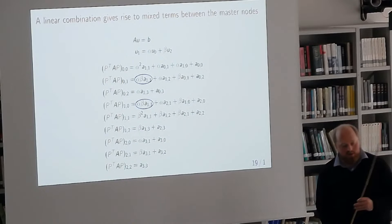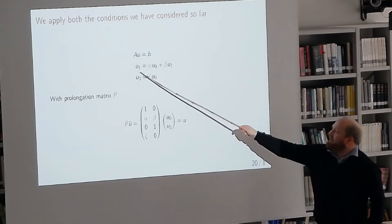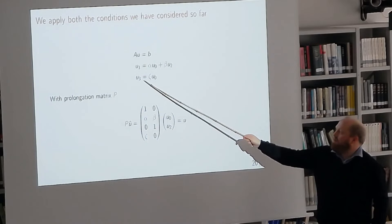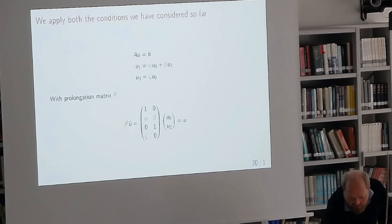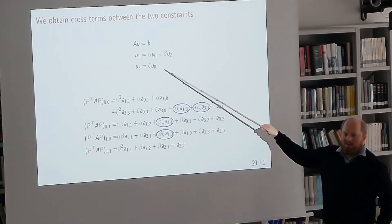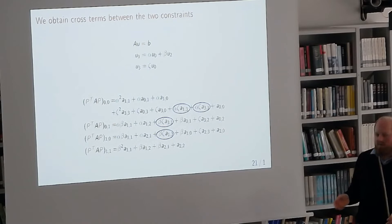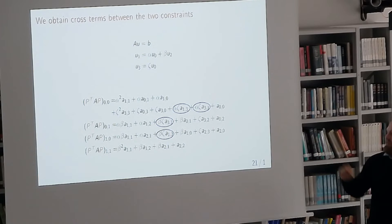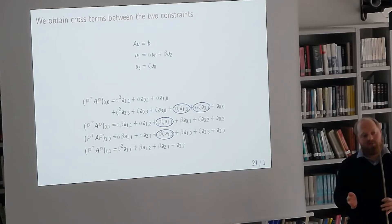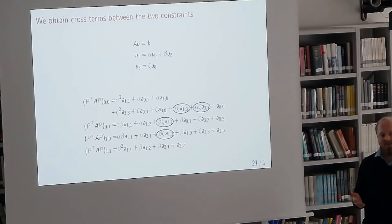If we have two constraints — u1 equals alpha*u0 plus beta*u2, and u3 equals zeta*u0 — we get a prolongation matrix that reduces the system to two-by-two, but now with interactions between the two different linear equations. You get a lot of extra contributions in your matrix that you don't know about before assembling, which adds many potential non-zero entries. This means you do not want to do the matrix-matrix-matrix multiplication on a global level, because before setting up the prolongation matrix, you don't know how many non-zero entries you're actually going to add.